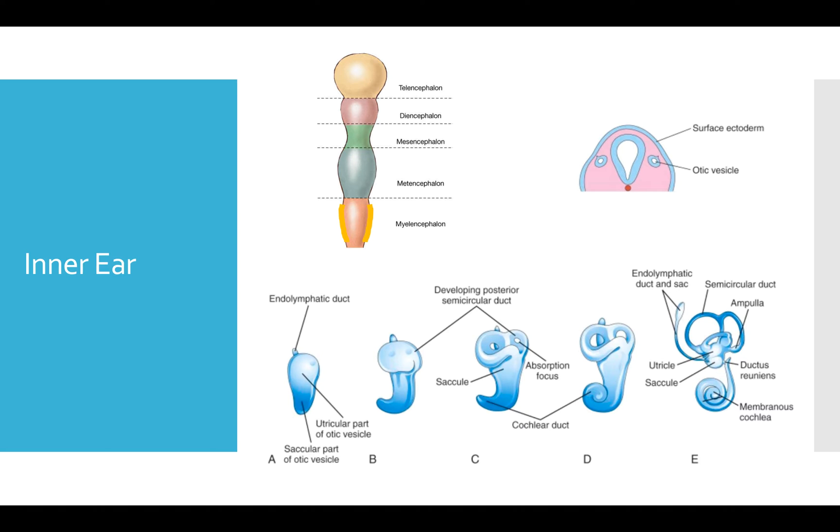So this thickens and then invaginates and pinches off to form the otic vesicle. Now to get a better idea of this, we're going to cut the neural tube right here. And now we're going to look cranially, and this brings us to the picture here on the right. You can see here that the otic vesicle is made up of surface ectoderm, but has invaginated itself into the neural tube.